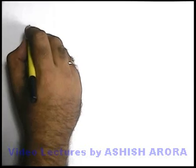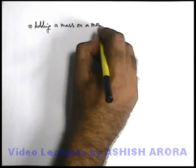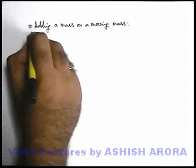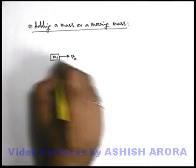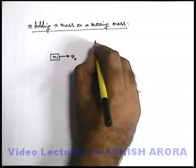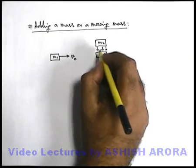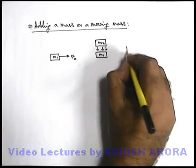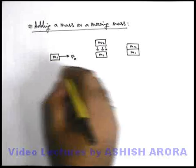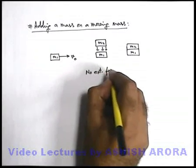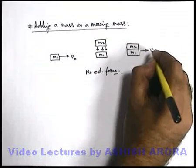Let's see another example: adding a mass onto a moving mass. This is also a very common basis for many different kinds of problems. Say we have a block of mass m₁ moving at speed v₀. During its motion, another block of mass m₂ is gently dropped onto it, and it is dropped in such a way that due to friction m₂ will stick to m₁. So obviously after this point, both blocks will move together when m₂ is added onto m₁. As no external force is present in the system, the total momentum of the system will remain conserved.